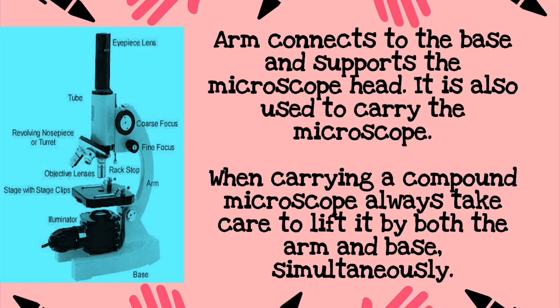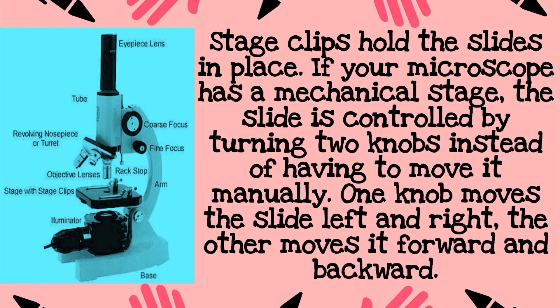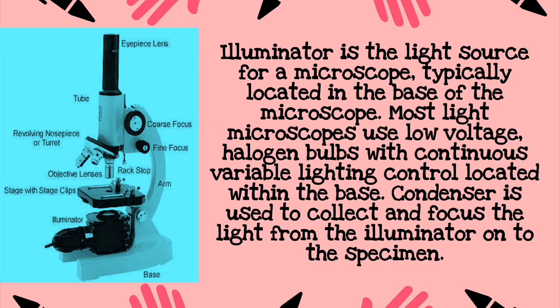The arm connects to the base and supports the microscope head. It is also used to carry the microscope. Next, stage clips hold the slides in place. If your microscope has a mechanical stage, the slide is controlled by turning two knobs instead of moving it manually — one knob moves the slide left and right, the other moves it forward and backward.